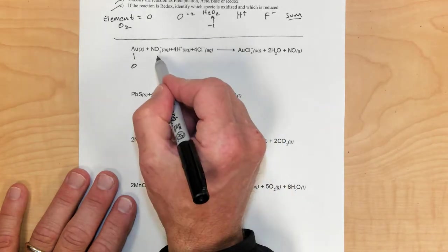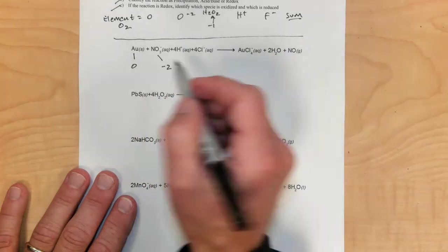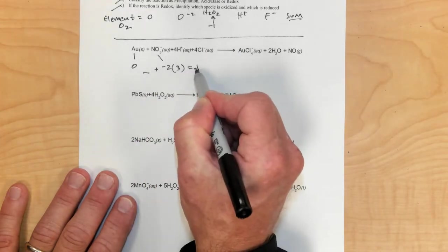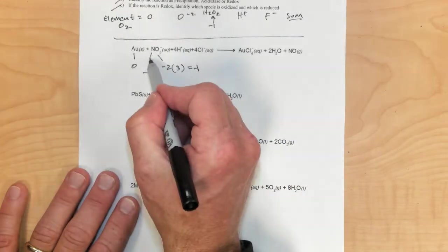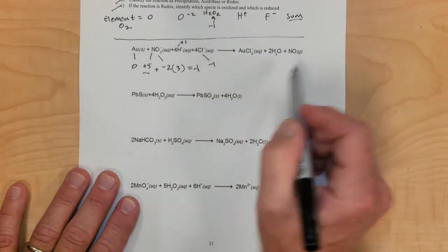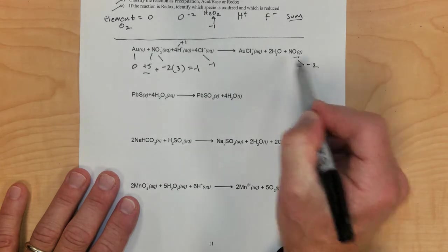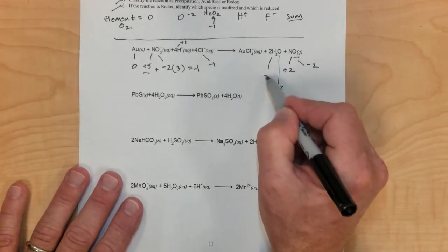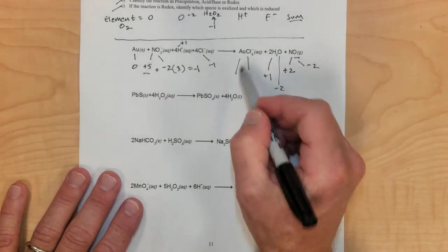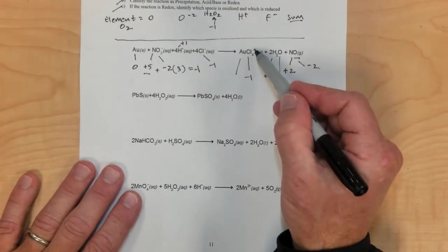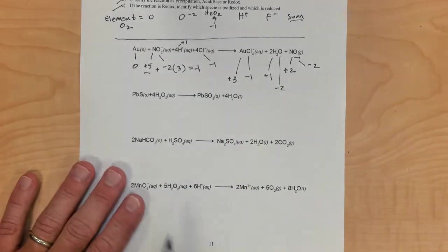Gold is 0 because it's alone by itself. Oxygen would be negative 2, and then something plus negative 2 times 3 — because there are 3 oxygens — equals negative 1, because there's a negative 1 in the upper right-hand corner. So nitrogen would have to be plus 5. Hydrogen is plus 1, chlorine is minus 1. On the other side, oxygen is negative 2, so nitrogen must be positive 2. Oxygen is negative 2, hydrogen is positive 1. Chlorine is in the group that's usually negative 1, so if negative 1 times 4 has to add up to negative 1, then gold must be positive 3.